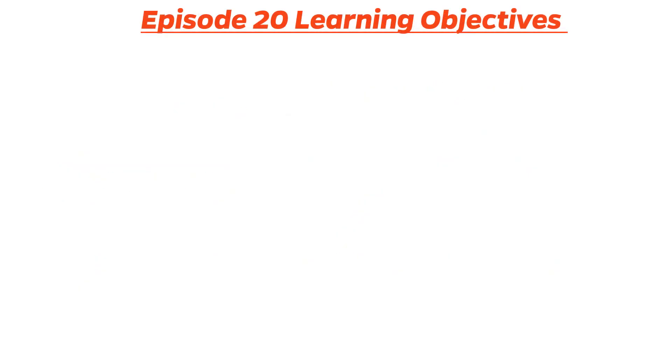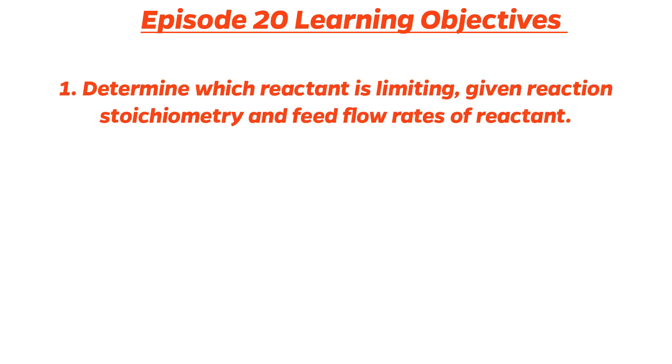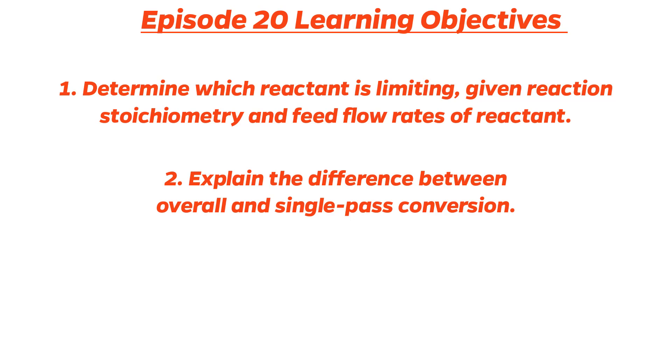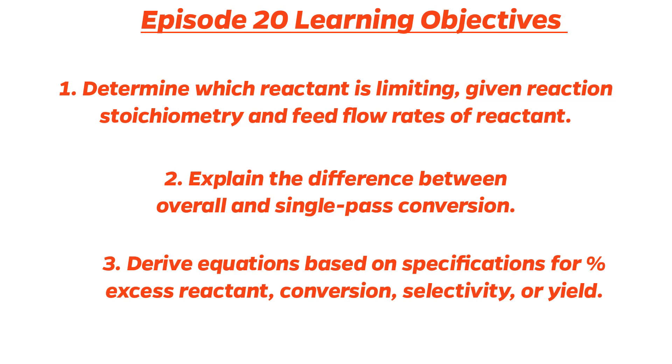Episode 20 Learning Objectives. Now that this episode is over, you should be able to: 1. Determine which reactant is limiting given reaction stoichiometry and feed flow rates of reactant. 2. Explain the difference between overall and single pass conversion. 3. Derive equations based on specifications for percent excess reactant, conversion, selectivity, or yield.